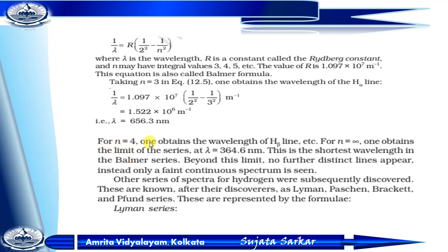For n = 4, this gives the H-beta line. For n = ∞, one obtains the limit of the series at λ = 364.6 nm, which is the shortest wavelength in the Balmer series. Beyond this, no further distinct lines appear — only a continuous spectrum.